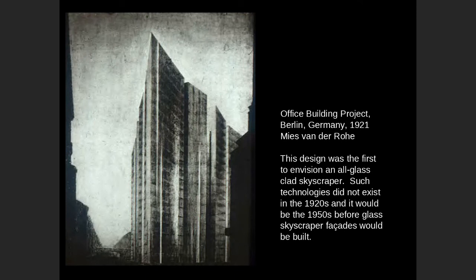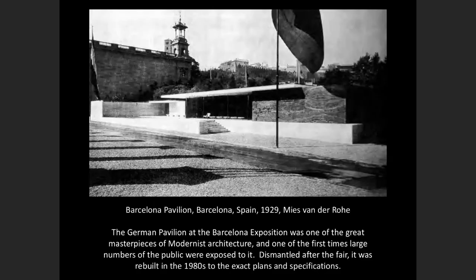One of his first really important early works is the German pavilion known as the Barcelona Pavilion during the world's fair in Barcelona in 1929. He collaborated with his design partner Lily Reich. This was meant as a temporary building — a place where the king and queen of Germany would be received when they visited the fair, and where others could visit and experience modern design and elements of a new modern Germany, which ironically was about to be transformed by the Nazis in just a few years.